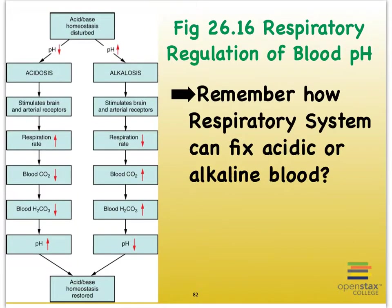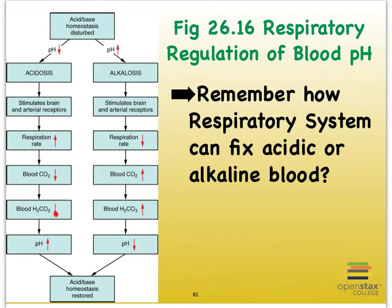Let's refresh our memory on what we mean by acidosis and alkalosis. When the acidity levels in our blood begin to rise due to the accumulation of too many hydrogen ions or too many acids in the blood, that represents a drop in the pH of the blood. That's going to stimulate chemoreceptors and receptors in our major arteries such that our respiratory centers tell us to increase our breathing and therefore blow off carbon dioxide, reducing the amount of carbon dioxide in the blood. If we do that, we're also reducing the amount of carbonic acid, which reduces the acidity and brings up the pH, restoring our acid-base balance.